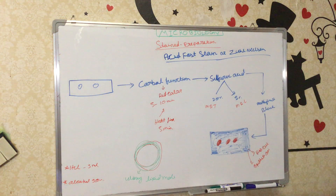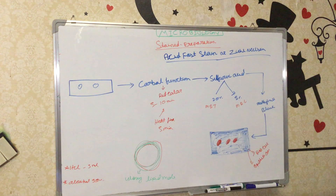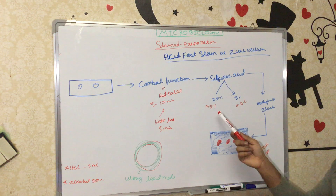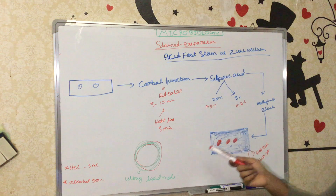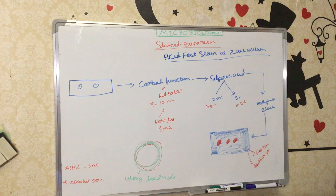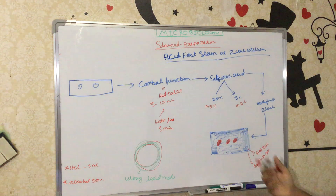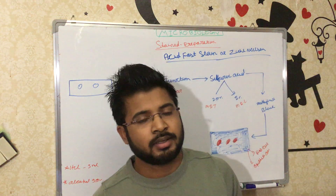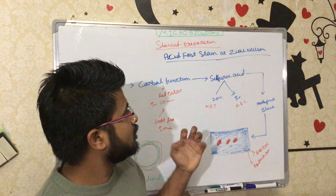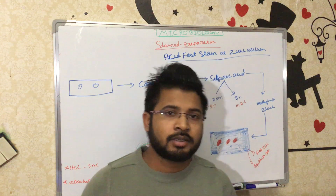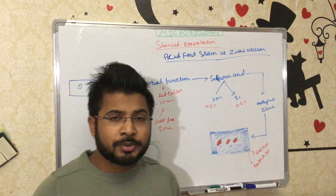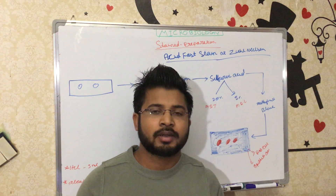The sulfuric acid concentration must be carefully controlled — if it is too high, even the mycobacterium red color may be washed away along with the background. This is important for diagnosis of tuberculosis. In summary, the acid-fast stain and gram stain are both very popular and important methods in microbiology. Hope you liked this video — thank you, take care.